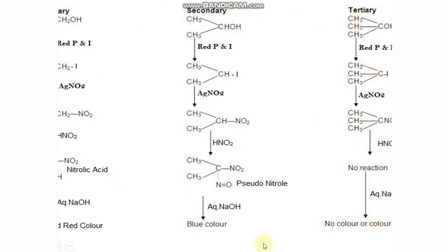So this test is also used for distinguishing primary, secondary and tertiary alcohols. If we get a red color solution, we can understand that the original alcohol is primary. If we get a blue color, then the original alcohol is secondary. And if the solution is colorless, then the alcohol is tertiary.